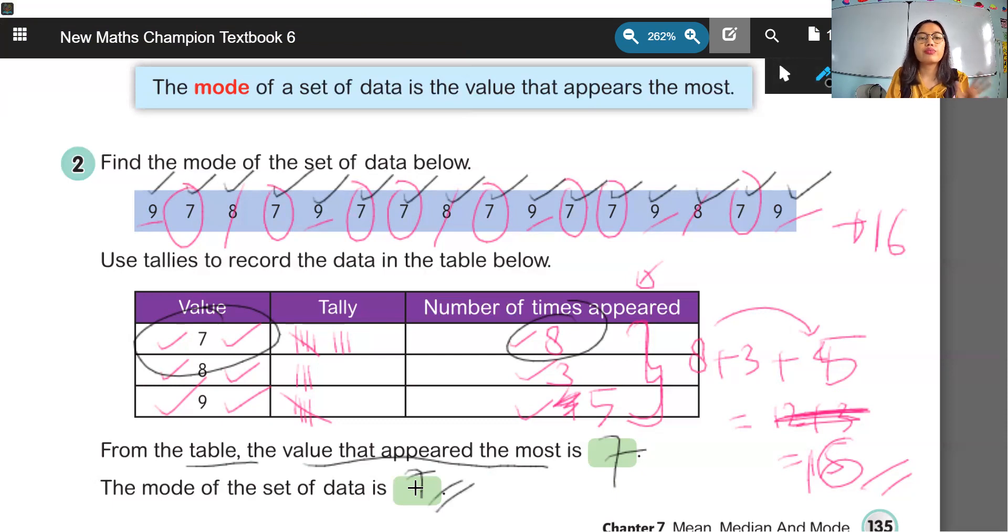Oke? So, from the question, we can see the mode of the set of data is 7. Okay, kids, I think that's all for today. We will discuss more in the Zoom meeting. Just prepare yourself and see you in the meeting. Bye-bye, all.